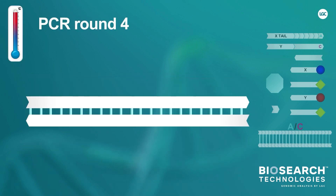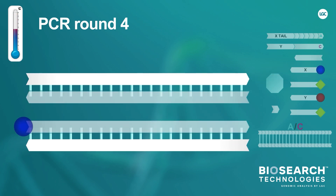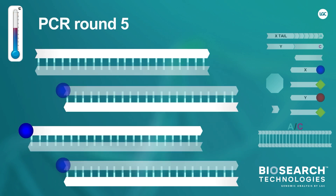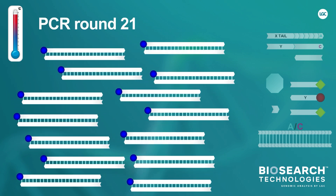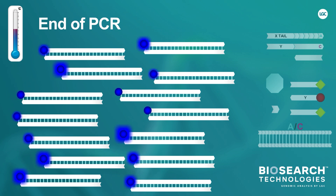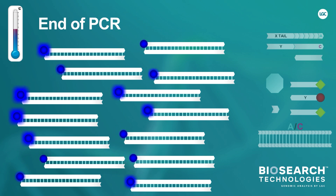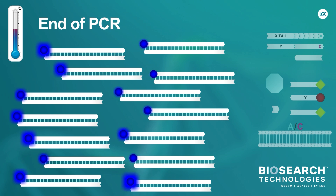As the PCR progresses with further rounds of denaturation, annealing, and extension, the number of PCR products increases exponentially. This results in a greater and greater amount of FAM labeled oligos becoming incorporated and subsequently less being quenched in the reporter cassette. CAASP is an endpoint genotyping chemistry and should therefore only be read once the PCR reaction is completed. Depending on the alleles that are present in the original DNA template, either the FAM labeled oligo, the HEX labeled oligo, or both would have been incorporated into the PCR product. In this example, the DNA template was homozygous for the allele A and therefore only the FAM labeled oligo has been incorporated.